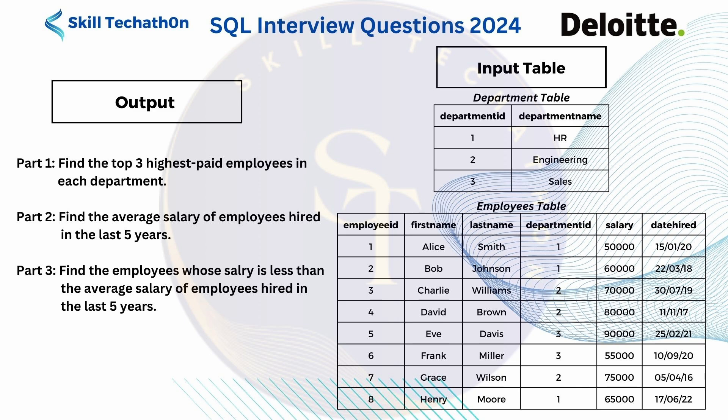We have been given an input with two tables. The Department table has department ID and department name — three departments: one, two, and three, which are HR, Engineering, and Sales. Then we have an Employees table with employee ID, first name, last name, department ID, salary, and date hired, and we have eight records.